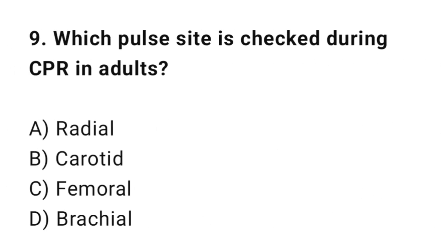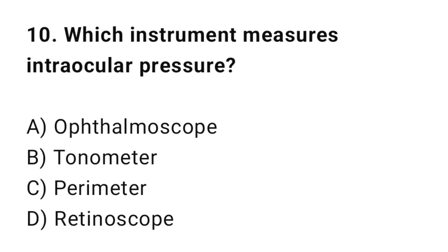Question 9: Which pulse site is checked during CPR in adults? The correct option is B: Carotid. Question 10: Which instrument measures intraocular pressure? The correct option is B: Tonometer.